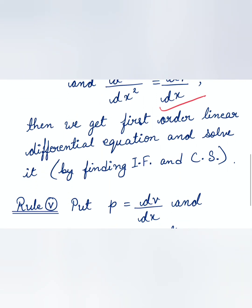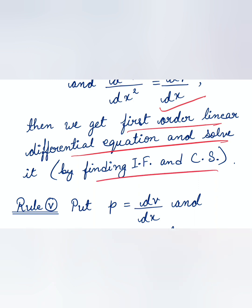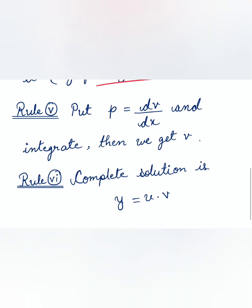In Rule 4, we put dv/dx = p and differentiating gives d²v/dx² = dp/dx. Substituting these, we get a first-order linear differential equation, which we solve by the usual method — finding the integrating factor and then the complete solution.